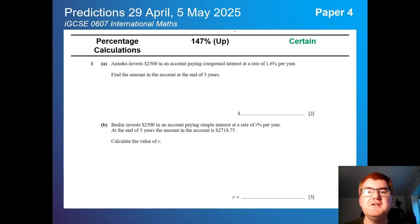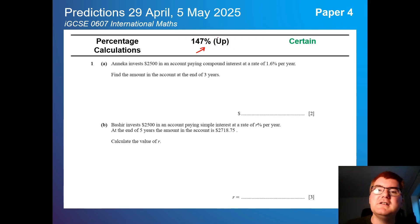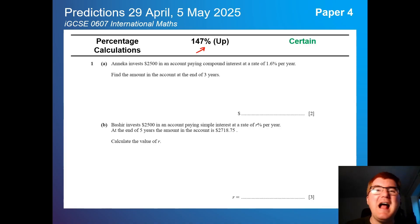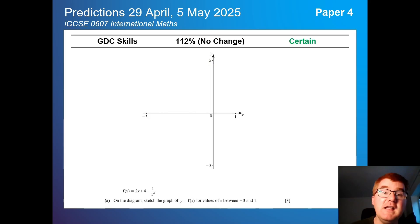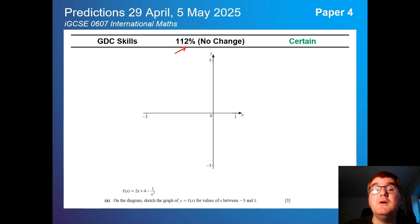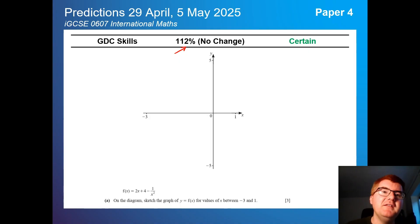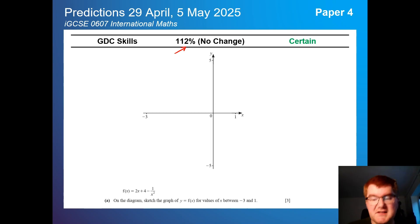Percentage calculations are up at 147%, so that's quite high — expect one of those big detailed percentage questions on paper 4, and I don't think that will change with the 2025 syllabus. GDC skills are also at 112%. There's always been at least one question on paper 4, sometimes two. Because the paper is now slightly smaller, I think it's a guaranteed one question where you can pick up 10–12 good marks.